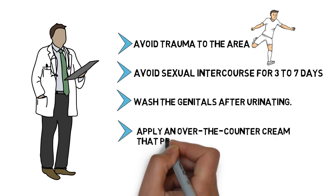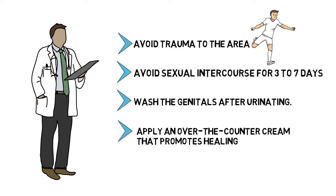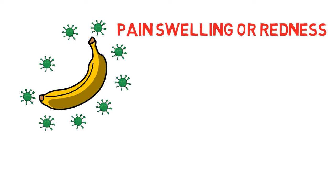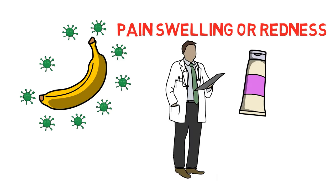Apply an over-the-counter cream that promotes healing. This can be applied two to three times a day, such as Cicatricure or Aquaphor. When signs of infection emerge like pain, swelling, or redness, you should see your doctor or urologist to start treatment with antibiotic ointment.